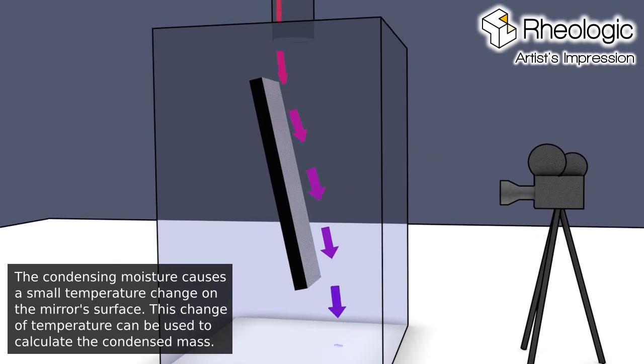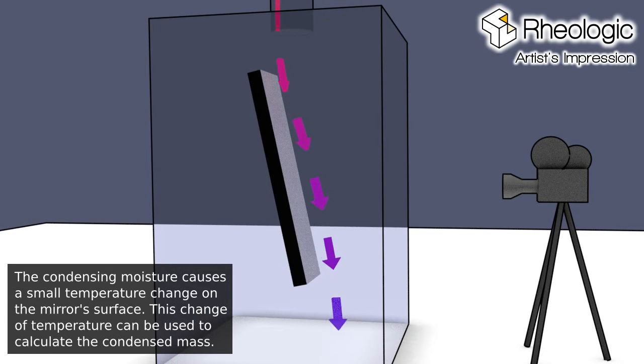The condensing moisture causes a small temperature change on the mirror surface. This change of temperature can be used to calculate the condensed mass.